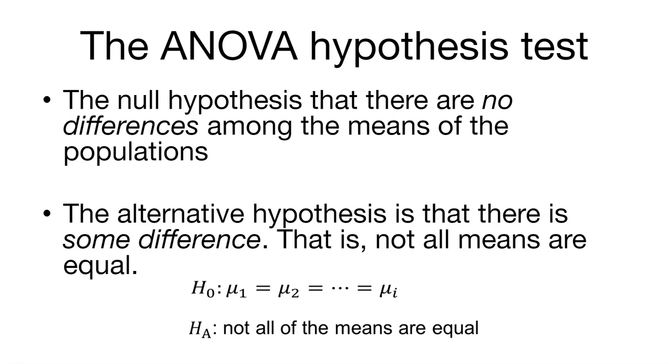Now in this case, this is important to know because even if you have lots of different means, even if just two of them are different, but you have 20 or 30 means, the alternative hypothesis would be supported if just two of them are different. And we'll talk about that in our example.